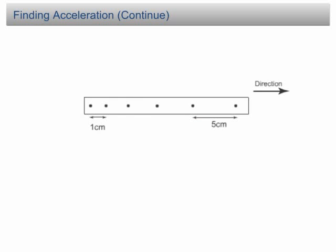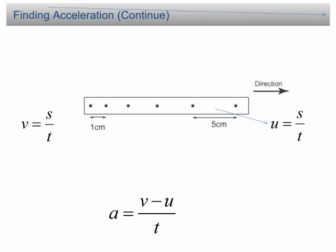In the previous slide, we learned that we can determine acceleration from the equation a = (v - u) / t. The initial velocity u can be determined by measuring the length of the first tick and then dividing it by the time taken for one tick. The final velocity v can be determined the same way. Usually, students will have no problem with this step.